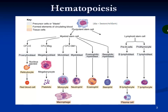In hematopoiesis we start off with a pluripotent stem cell, also known as a hemocytoblast. The first kind of cell we make is a proerithroblast. The nucleus gets ejected, and after the nucleus is ejected we call that a reticulocyte, which then becomes a red blood cell. The second kind of cell that develops is the megacaryoblast, which builds megacaryocytes that eventually break into pieces — and we call those platelets.